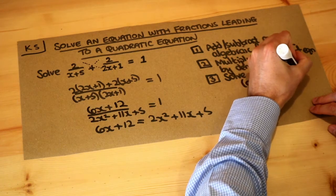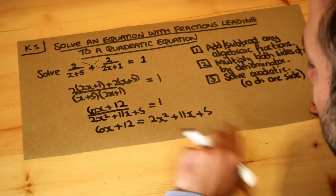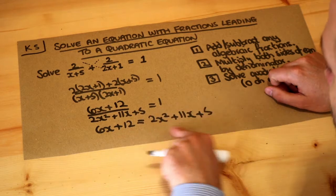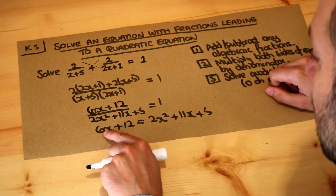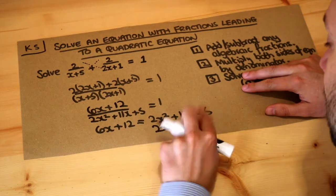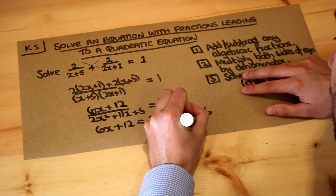We should put everything else on the side where the x² will be positive. So let's put everything on the right-hand side so we have a positive x² term. We're going to subtract 6x, so we subtract 6x from this and we're going to get 5x.